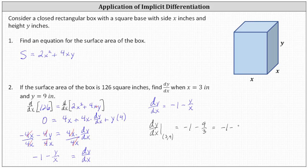Simplifying, we have negative one minus three, which is negative four. So the value of dy/dx at the point (3, 9), or when x is 3 inches and y is 9 inches, is negative four.